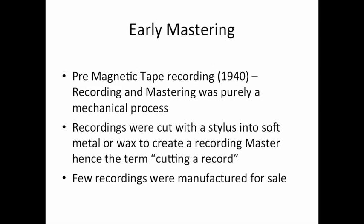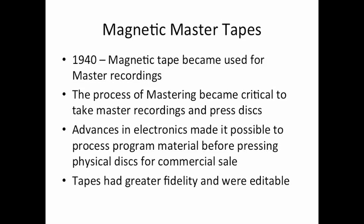Few recordings were manufactured for sale at that time. In the 1940s, magnetic tape came along and changed everything, because magnetic tape was used as the master recording — it offered better sound quality and editability. But you couldn't just go sell tapes because not everybody had a tape player, and it was too expensive a medium to commercialize. So mastering became critical: how do we make an inexpensive medium people can buy at the store and commercially exploit music? It became discs. Advances in electronics made it possible for program material to be sold on physical discs for commercial sale — that was the first step in making the music industry commercially viable.